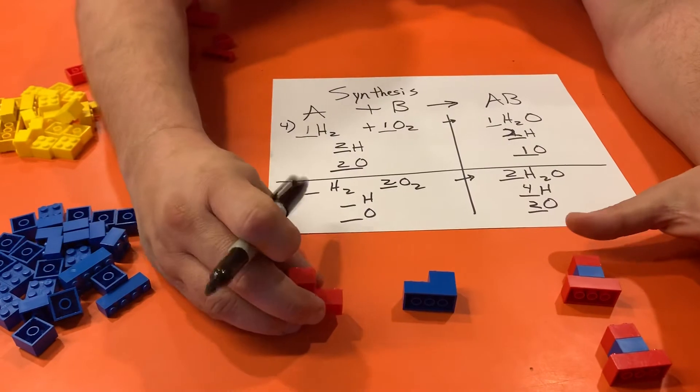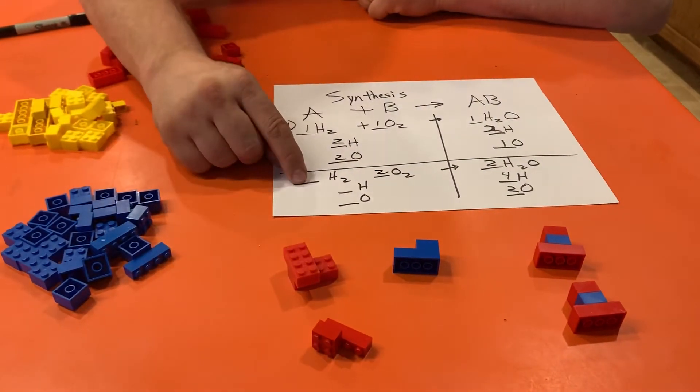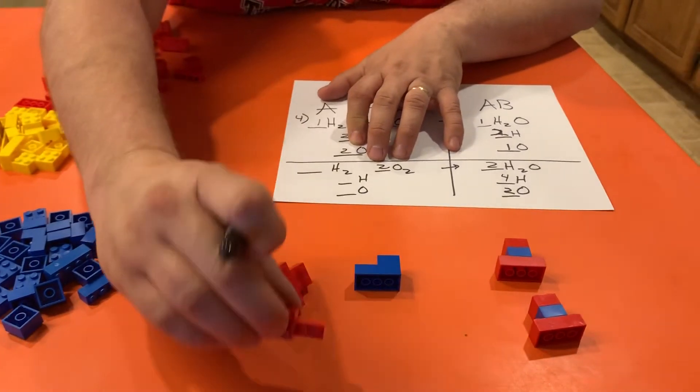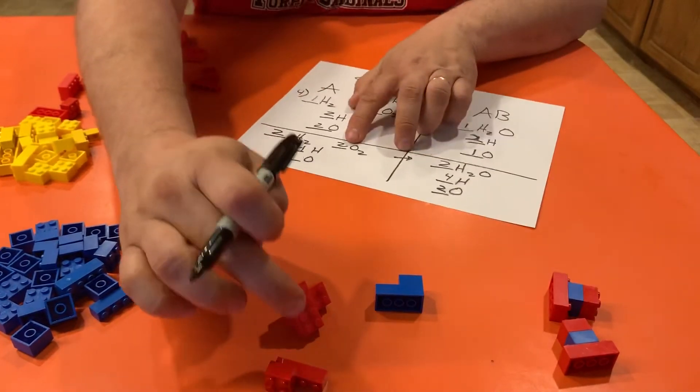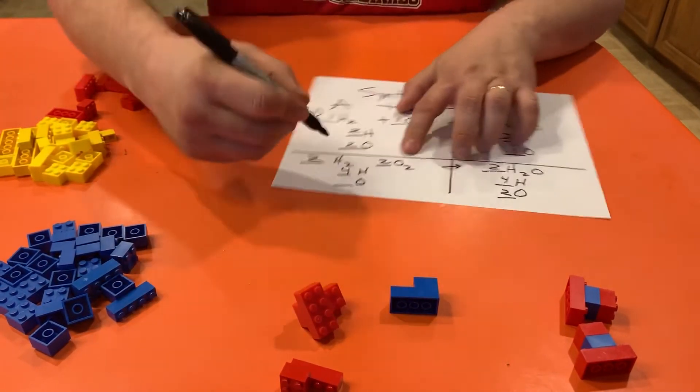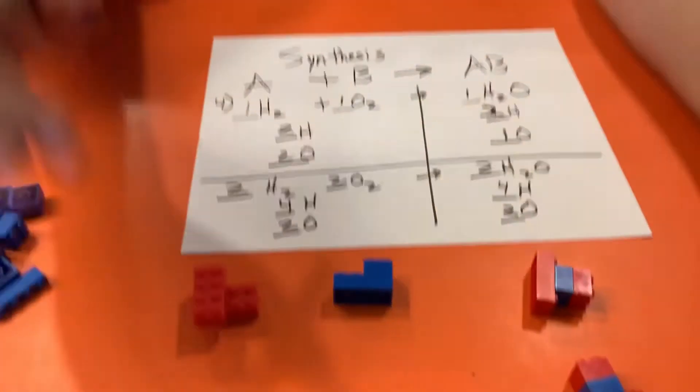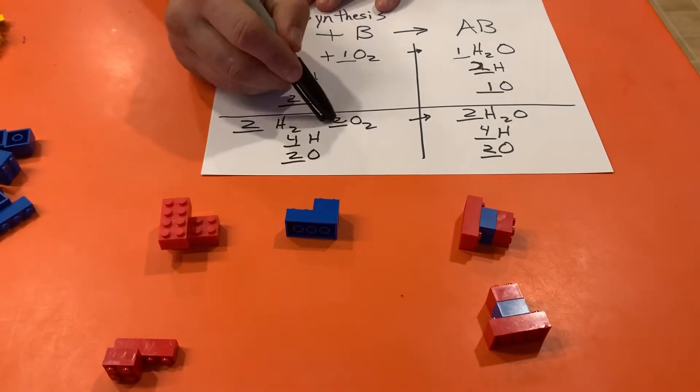But now I don't have enough red. Well guess what I can do? I can go ahead and put a two right here. So instead of one stack I've got two stacks. When I do that I get one, two, three, four red Legos—4H—and I've got one, two blue Legos.